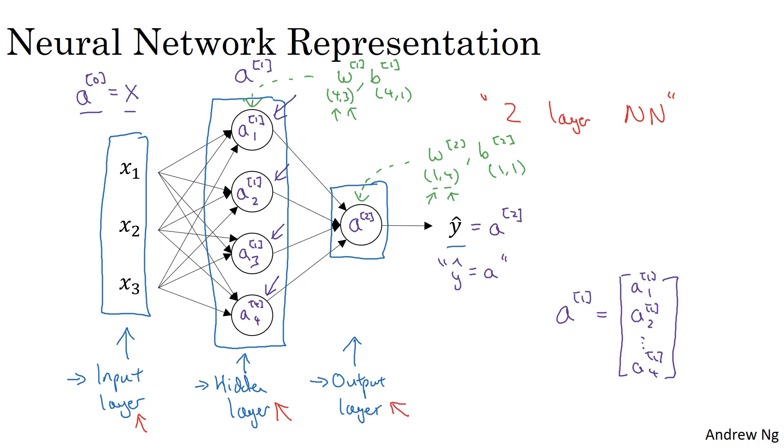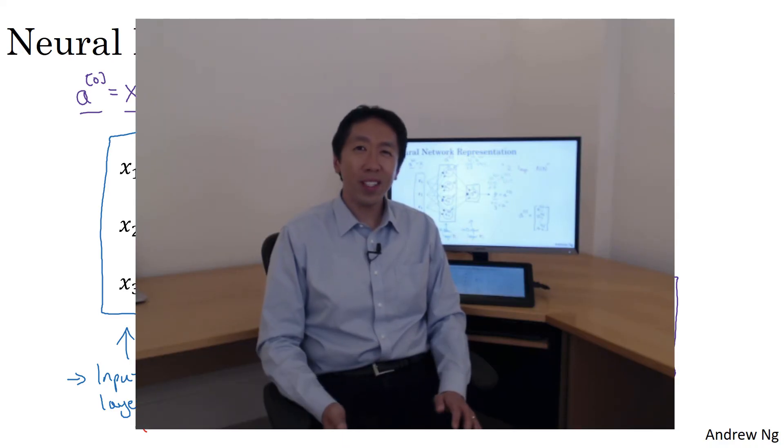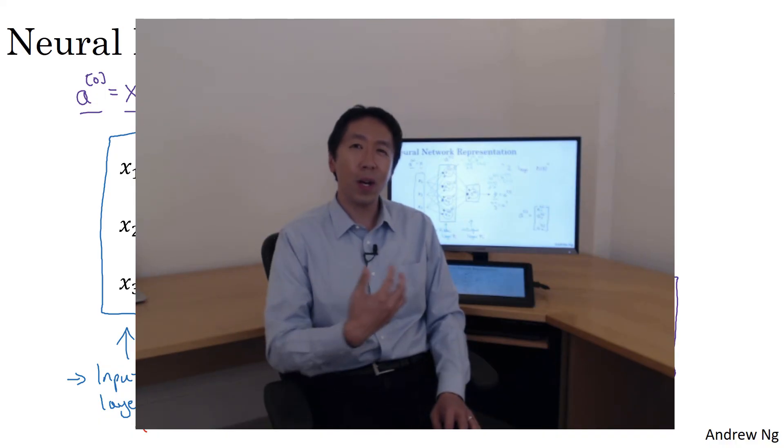But again, we'll go over the dimensions of these matrices and vectors in a later video. So you've just seen what a two-layer neural network looks like. That is a neural network with one hidden layer. In the next video, let's go deeper into exactly what this neural network is computing. That is, how this neural network inputs x and goes all the way to computing its output y hat.